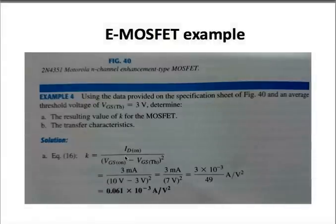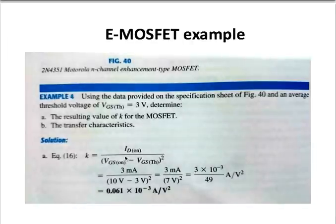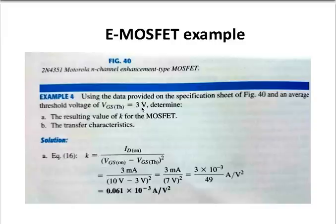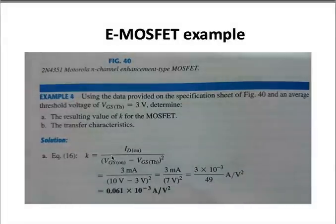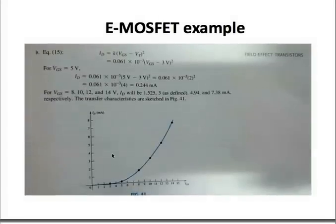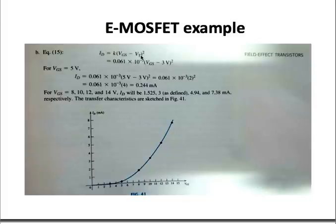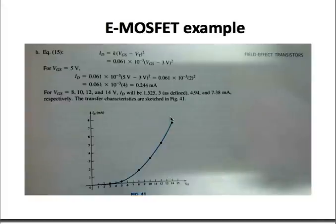Here is a quick example of an E-MOSFET. You are asked to sketch the transfer characteristic of an N-channel enhancement type MOSFET with a given threshold voltage of 3 V. First, calculate the constant K using the formula K equals ID(on) divided by (VGS(on) - VT)², with the values for ID and VGS found from the specification sheet. Once you have K, use the equation ID equals K(VGS - VT)² to calculate the drain current for any particular gate voltage of interest and plot those points to form the transfer characteristic.